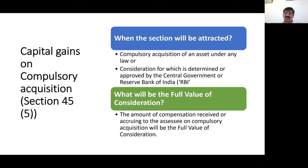Section 45-5 will apply when there is a compulsory acquisition under any law and the consideration is determined or approved by either the Central Government or the RBI. If the consideration is approved by the State Government, this section will not apply.